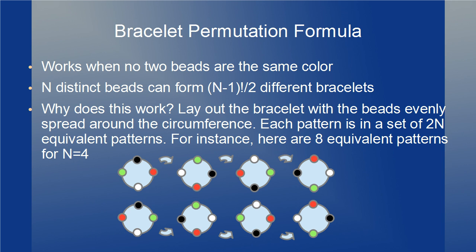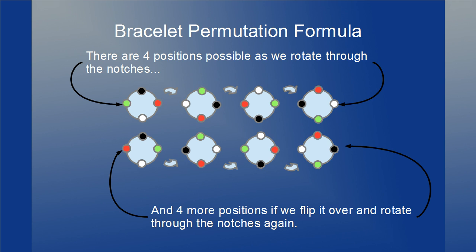Let's talk about how we got these numbers and we'll start with the classic bracelet permutation formula often taught in school. When there are n beads, each one a different color, the number of bracelets that can be formed is (n-1) factorial over 2. The best way to understand this is to lay out the bracelet in a perfect circle with the beads evenly spaced so that an irregular polygon is formed with vertices at the beads. For every bracelet, there are 2n positions it can be in — n positions as we rotate one notch at a time until it returns to where we started.